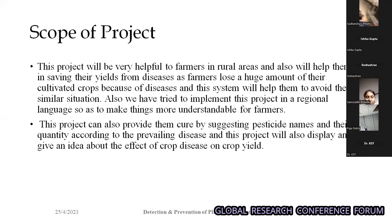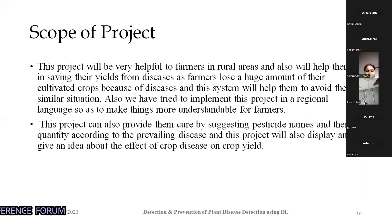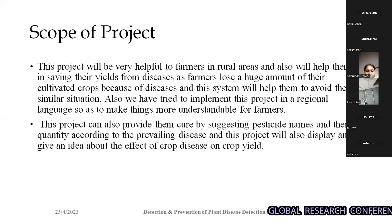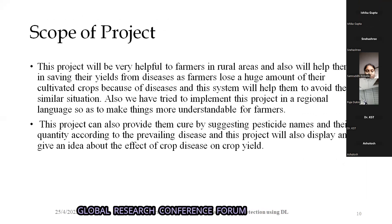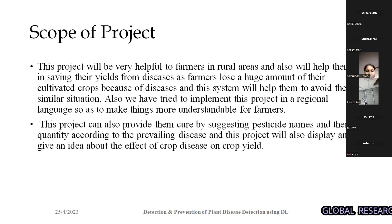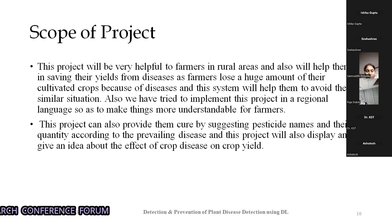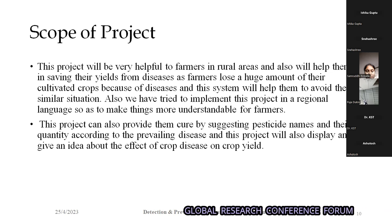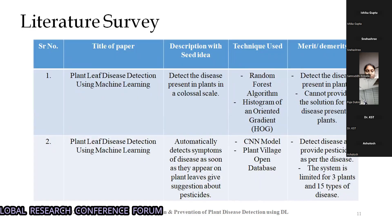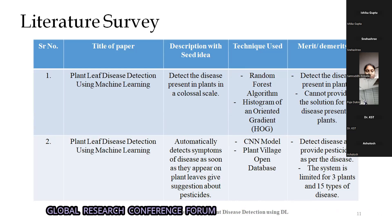The scope of the project includes support for three languages — Marathi, Hindi, and English — with plans to implement more languages as needed. The project also provides a cure by suggesting pesticide names and their quantities according to the prevailing disease, and will display and give an idea about the effect of crop disease on crop yield.